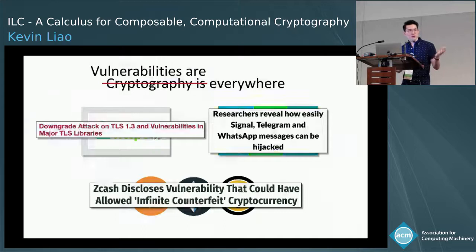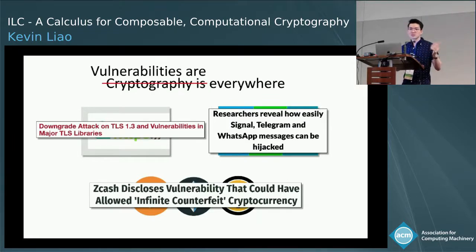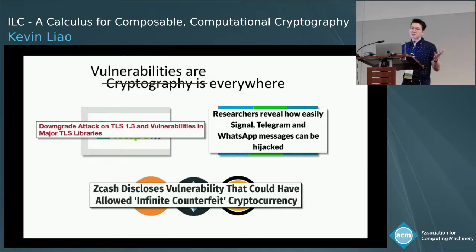Every year we hear about more and more severe cryptographic flaws. There are a lot of things that can go wrong, including buggy implementations and side channels. But the flaws I'm really referring to are flaws in the underlying constructs themselves — bugs in the proofs of security for these schemes. Cryptography and security proofs are just really difficult to write, even for experts.